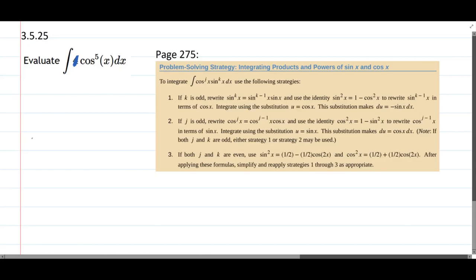So we're looking in page 275 in the textbook, that's section 3.5, and that's to integrate cos to a power times sine to a power. We don't have sine, so this k is zero for us, so we don't have the sine term.